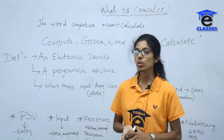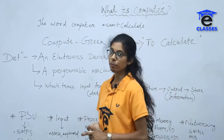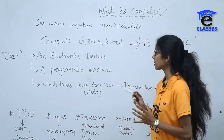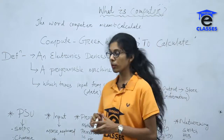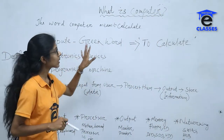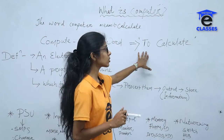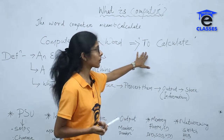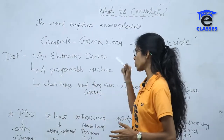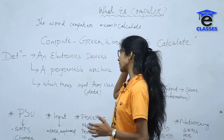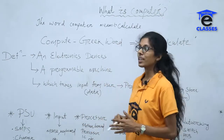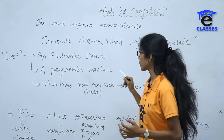Coming to the word 'computer' — 'compute' is a Greek word, and its meaning is 'to calculate.' So, coming to its definition, we will break the definition into three main parts. First, a computer is an electronic device.